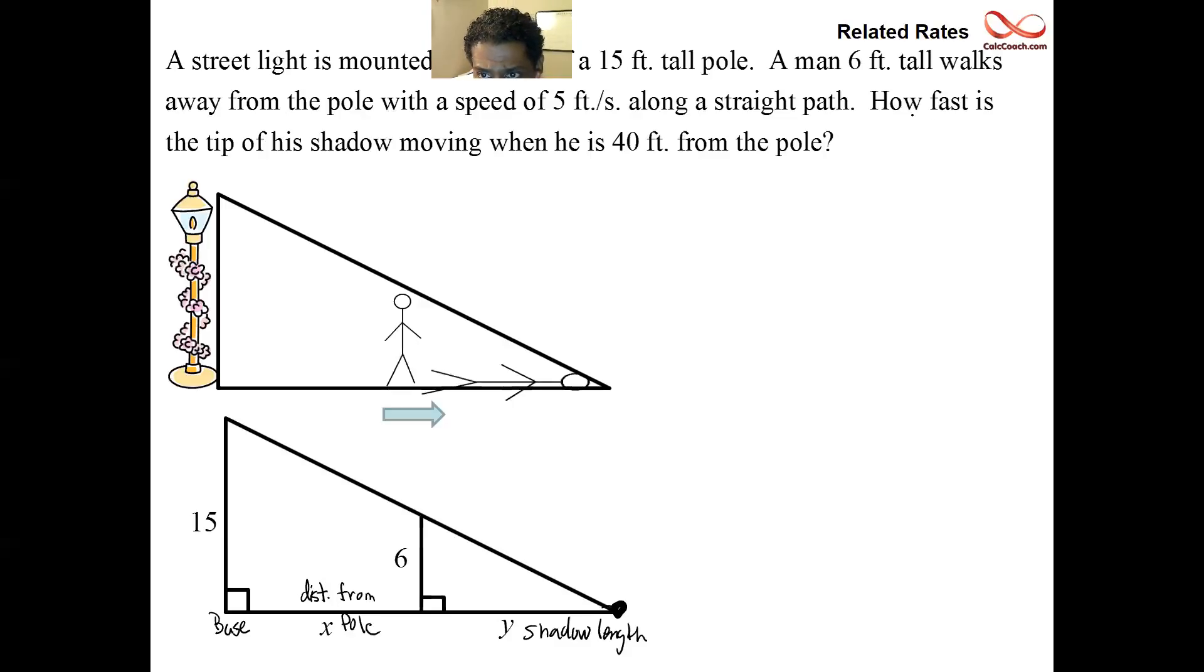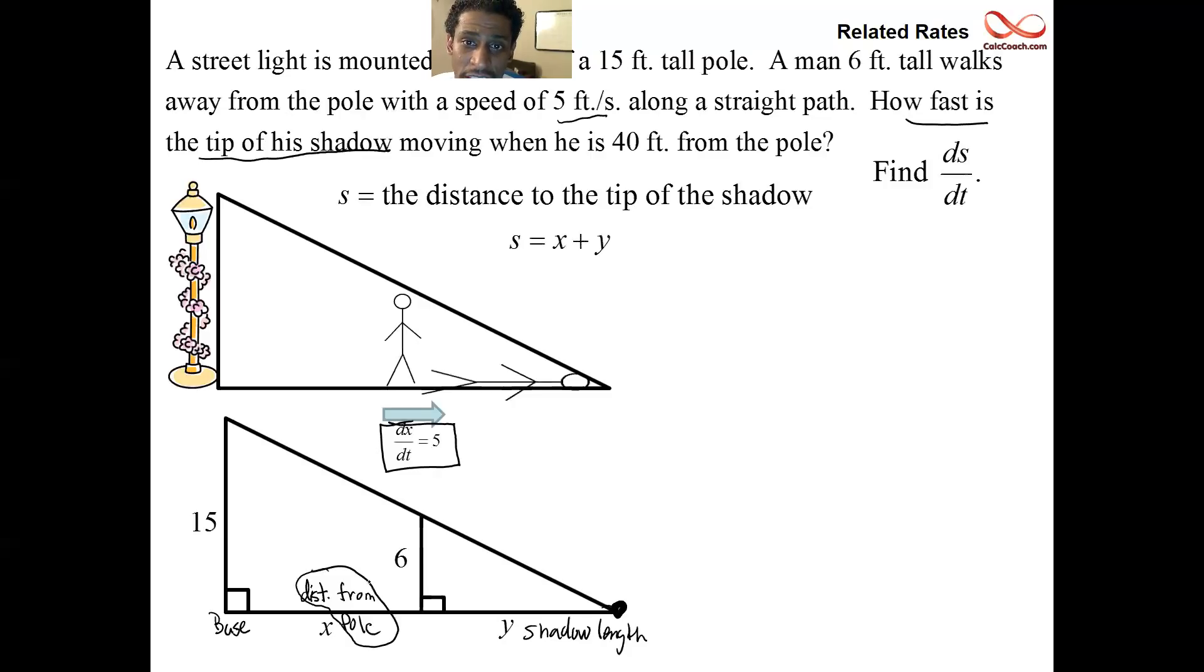So what we need to do is create a variable for the tip of the shadow. You see, the tip of the shadow actually involves two variables. It involves how far the person is away from the pole, and then it also involves how long the shadow is. And so we'll then give that length X, the distance to the tip of the shadow. The number that they gave us about the speed at which the person is walking away from the pole, that's how the distance from the pole is changing. And so we call that DX/DT. Don't know about DY/DT, though. That's not really given to us. And so, but S is equal to X plus Y. And our job is to find DS/DT.